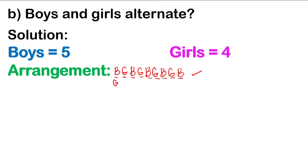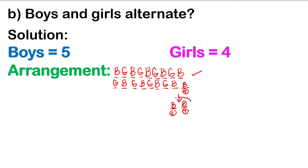What if we start with girls first? Girl, boy, girl, boy, girl, boy, girl, boy. Counting — all 4 girls are seated, but only 4 boys have sat down. So the 9th seat still needs a boy. That means seats 8 and 9 both have boys seated beside each other, which contradicts the restriction that boys and girls must alternate. Therefore, this second arrangement is not acceptable.